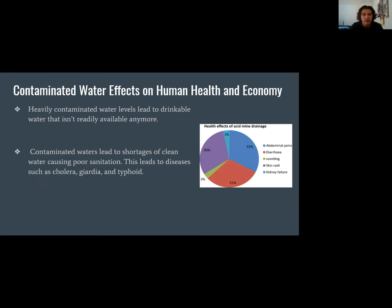Contaminated water effects on human health and economy. Heavily contaminated water levels eliminate readily available drinkable water. Water purifying companies in the U.S. must pay more for high-cost filtration systems. Poor population health is associated with lower savings rates, lower returns on capital, and lower domestic and foreign investment — all contributing to reduced economic growth. Contaminated water causes shortages of clean water, leading to poor sanitation and diseases such as cholera, giardia, and typhoid. The graph shows the health effects of acid mine drainage, with the highest occurrences being skin rashes, diarrhea, and abdominal pains.